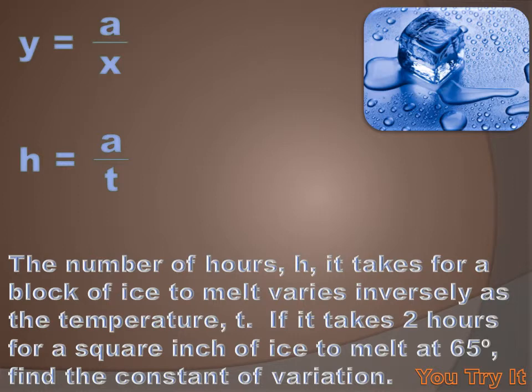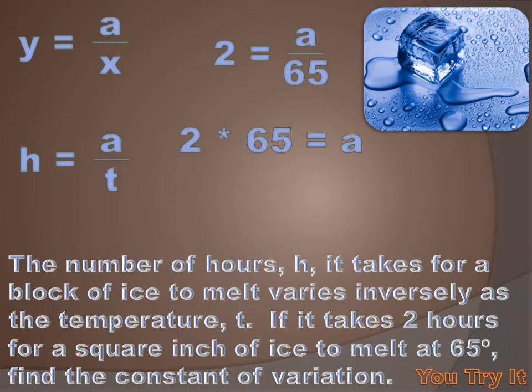Now they tell us that it takes 2 hours for ice to melt if the temperature is 65 degrees. And we're asked to figure out what a equals. What's the constant of variation? So we'll substitute 2 for h and 65 for t. And we'll solve for a. And we'll determine that the constant of variation is 130.